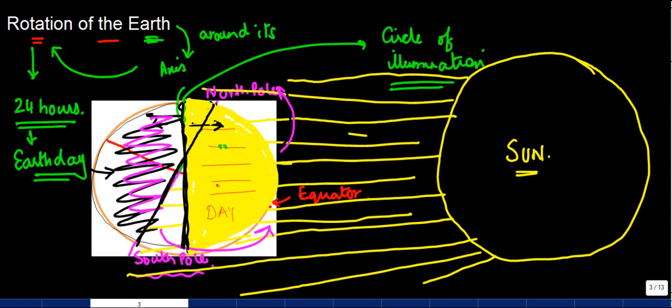Now, interestingly, if you see, this does not coincide with the axis. This was the axis, right? So it does not coincide with the axis. It need not necessarily be in line with the axis of the Earth.